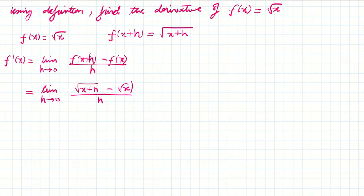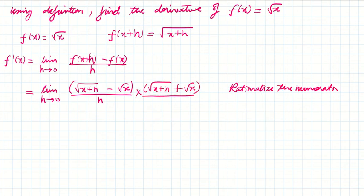To rationalize the numerator, you multiply and divide by the term with the opposite sign - this has a minus, so you put a plus: √(x+h) + √x. You rationalize - multiply and divide - you're not changing the expression. Then you apply the formula: (a-b)(a+b) = a² - b².